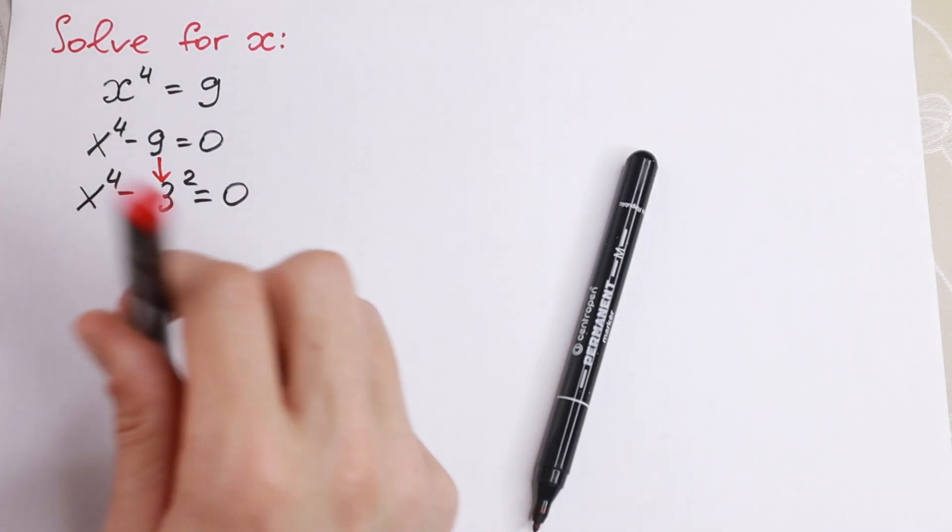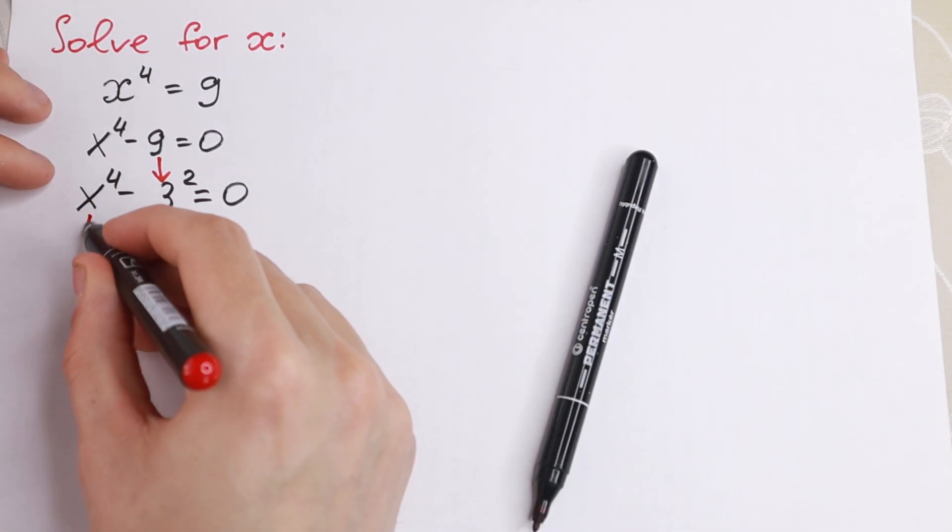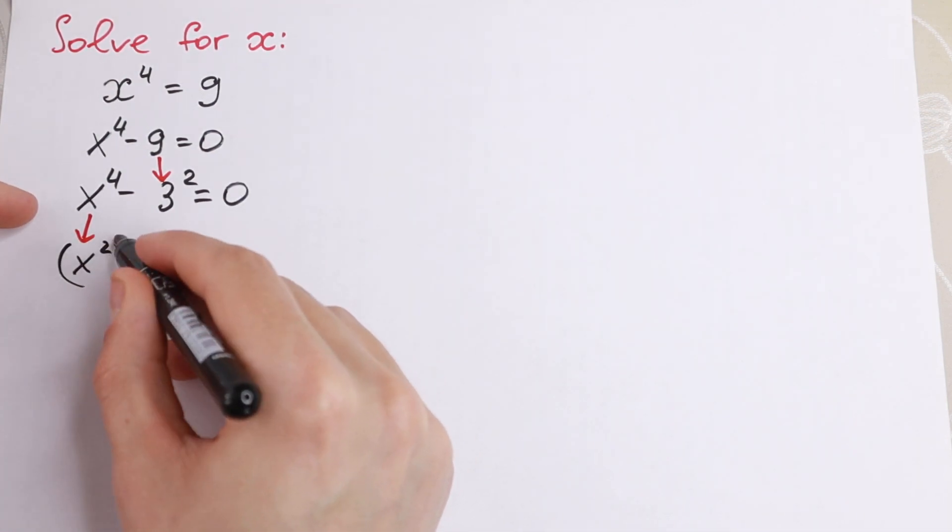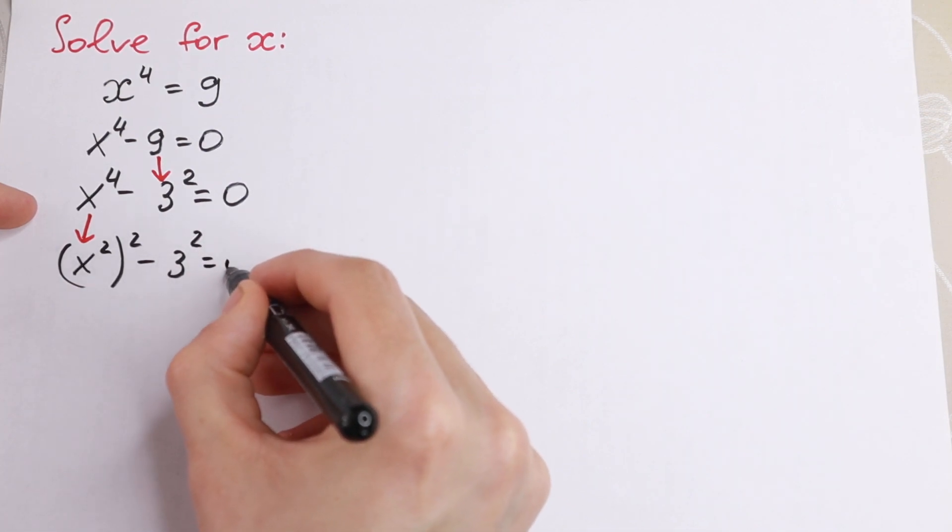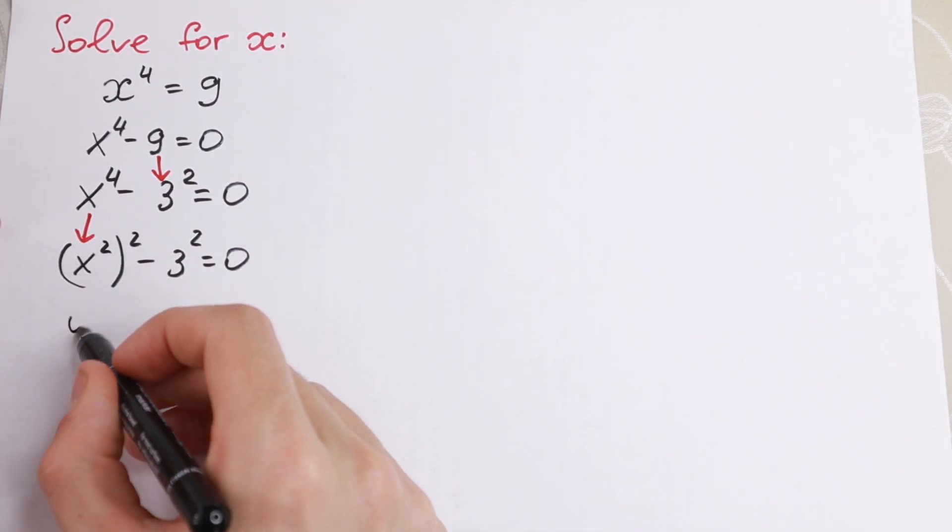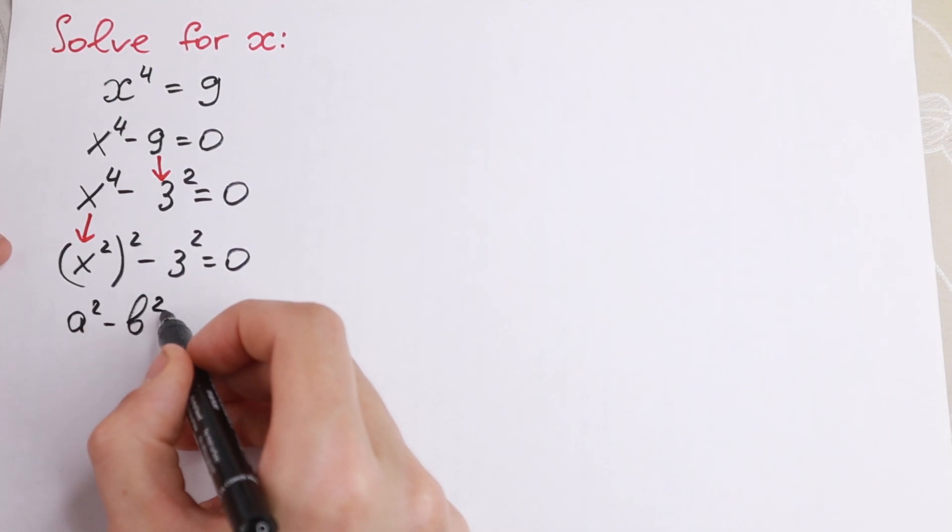But in our case we have difference of squares because as well we can write this x to the fourth power as x squared to the second power, minus 3 squared equal to 0. And right here we have difference of squares because a squared minus b squared we can split it into an identity a minus b times a plus b.